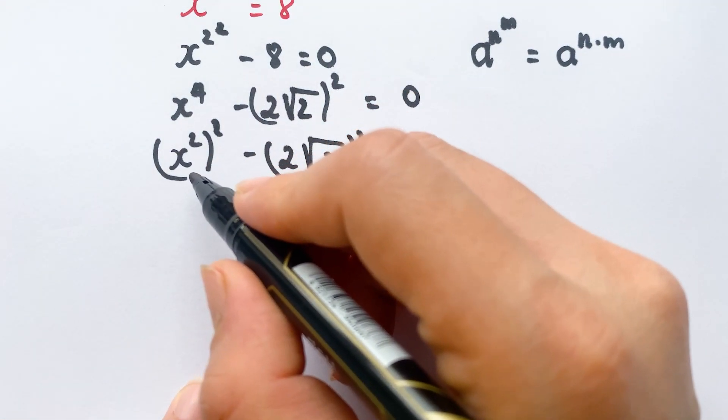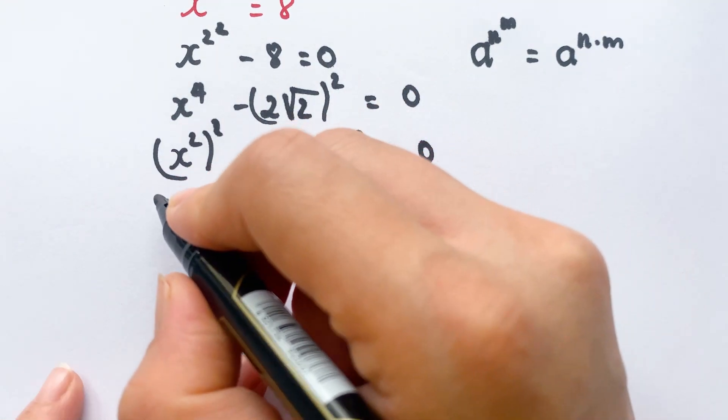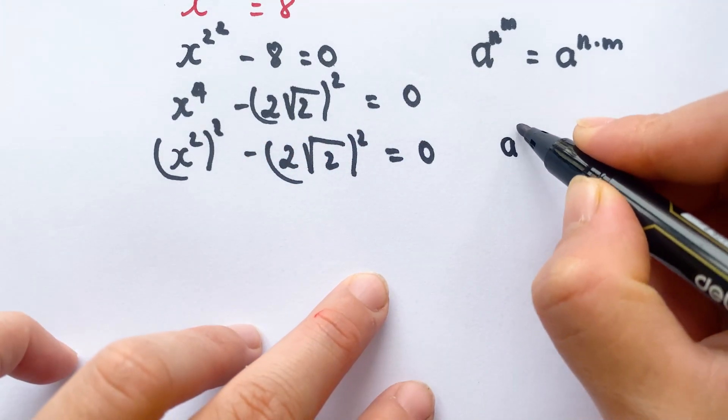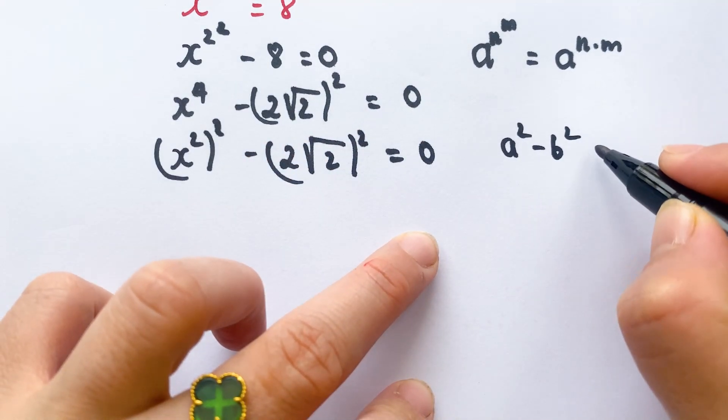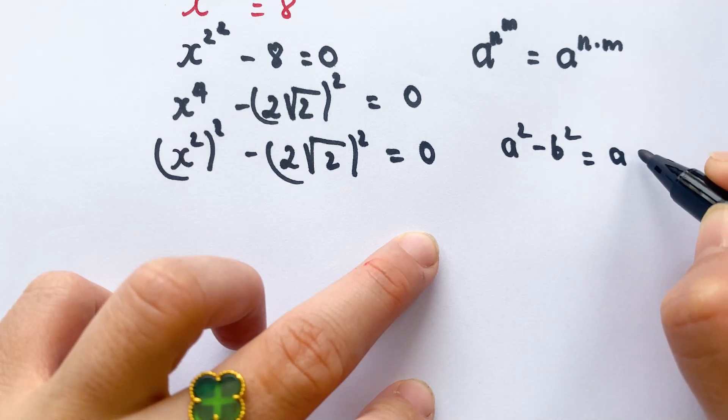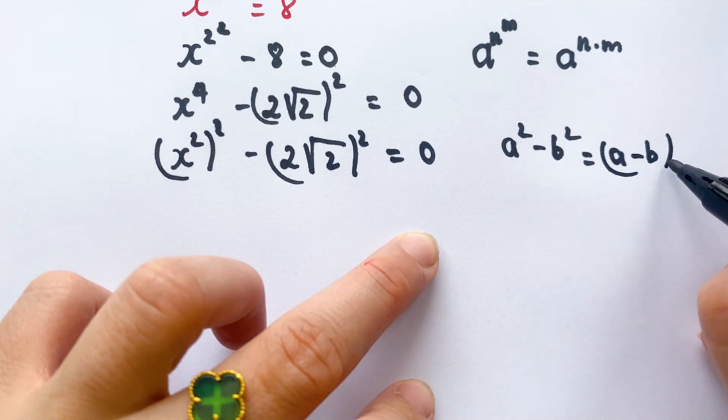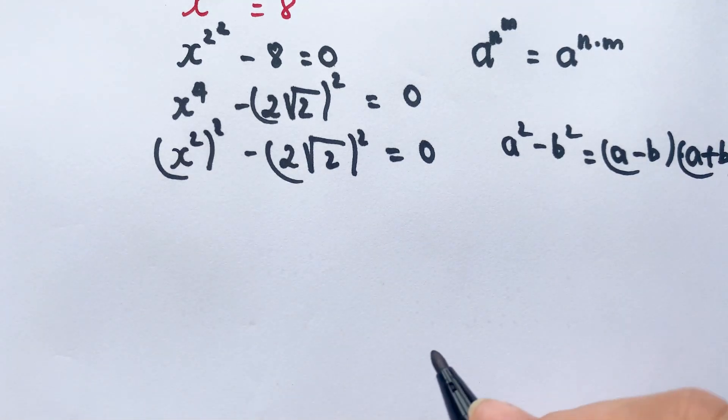Now you need to apply the identity: a^2 - b^2 = (a - b)(a + b).